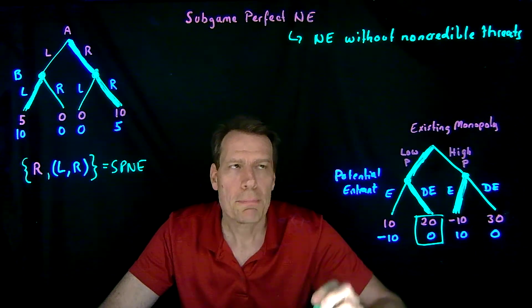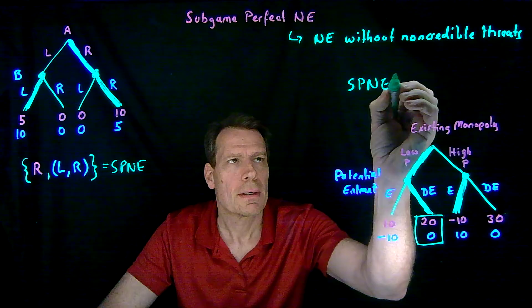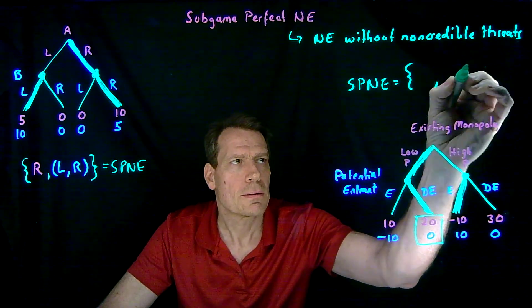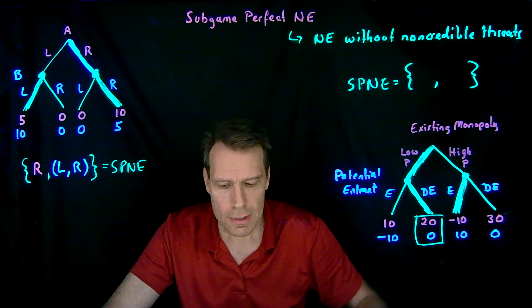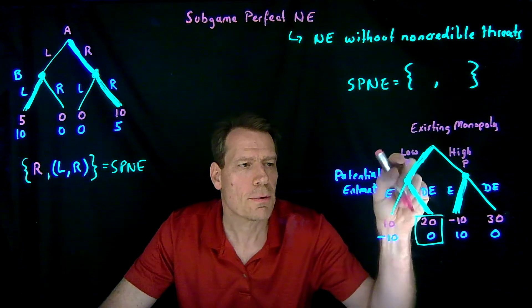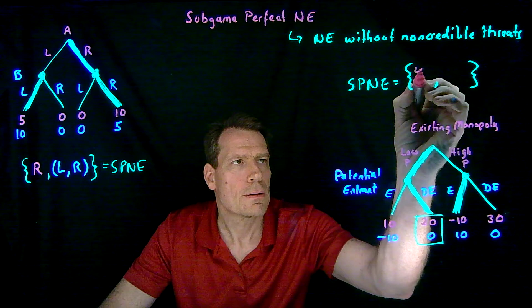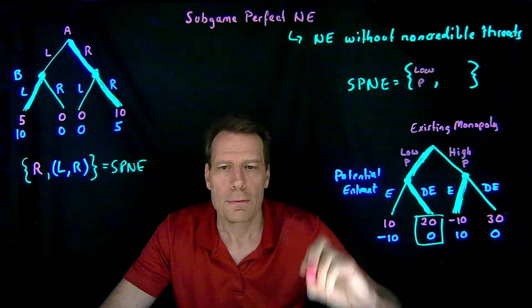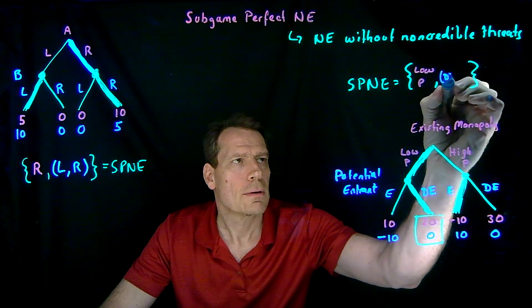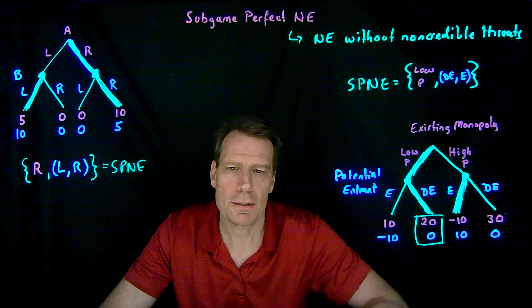So we found the subgame perfect Nash equilibrium. As in any equilibrium, it's just a set of strategies — but in this case, a set of subgame perfect strategies that doesn't involve any non-credible threats. The strategies are: low price for the existing monopoly, and don't enter at the first node but enter at the second node for the potential entrant.